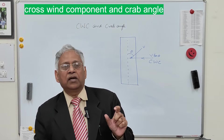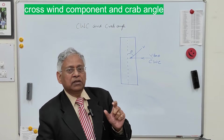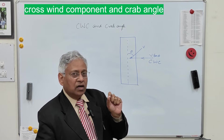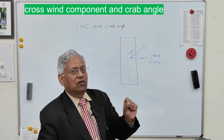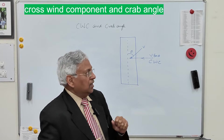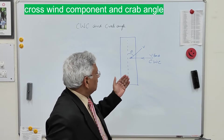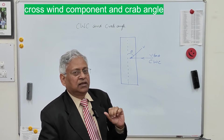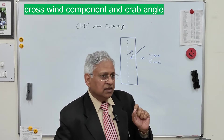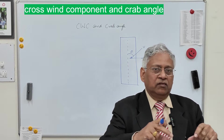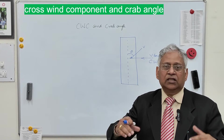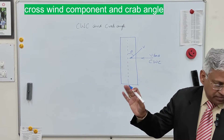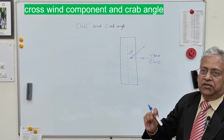This V sin theta is called the crosswind component, or CWC. This crosswind component is important because it can interrupt the safe landing or takeoff operation of an aircraft, and therefore this crosswind component should be kept as minimum as possible. The center line of the runway should be marked such that throughout the year this crosswind component remains within permissible limits.